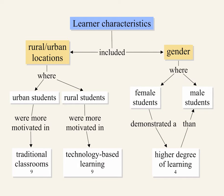Two learner characteristics that had an effect on motivation were rural and urban locations, and gender. For urban and rural locations, urban students demonstrated higher motivation levels than rural students in traditional classrooms. However, the opposite was true of technology-based learning. Regarding gender, it was found that female students showed a significantly higher degree of learning; therefore, in online learning environments, females learned better than males.